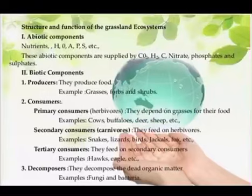Then come the consumers, which can be divided into primary, secondary, and tertiary consumers. Among the primary consumers, herbivores feeding on grasses include grazing animals such as cows, buffaloes, deer, sheep, rabbit, and mouse. Besides them, some insects, termites, and millipedes also feed on the leaves of grasses.